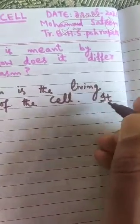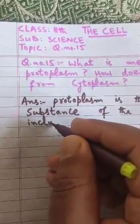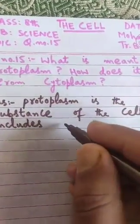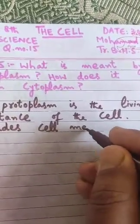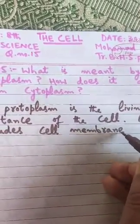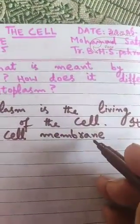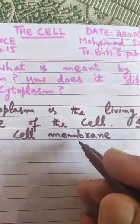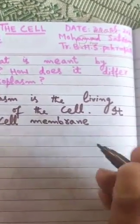Protoplasm includes: first, cell membrane. The cell membrane is the boundary of the cell and it is part of protoplasm. If there is no cell membrane, the cell will die — it will burst and all the contents will come out. So cell membrane is a very important living part of the cell.